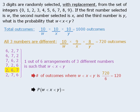This means our probability equals 120, the number of outcomes where the selected numbers are in ascending order, divided by 1000, the total number of outcomes. This equals 0.12, so the probability is 0.12 that the three numbers will be selected in ascending order.